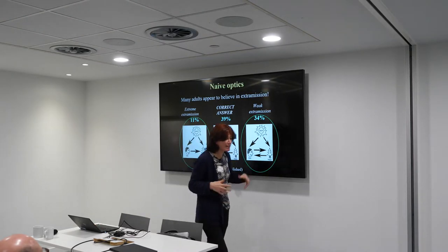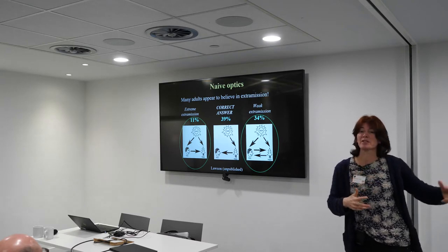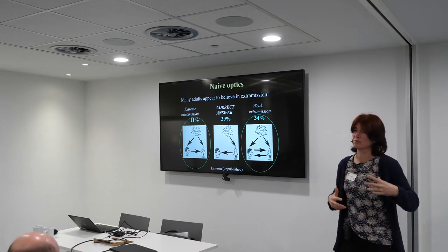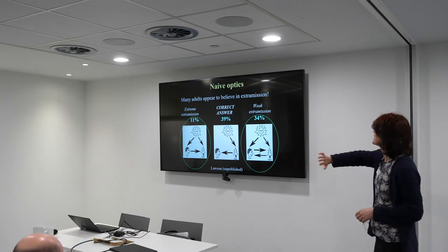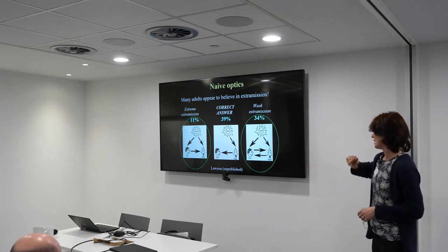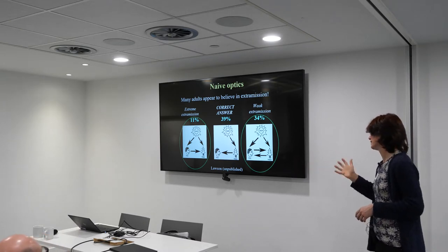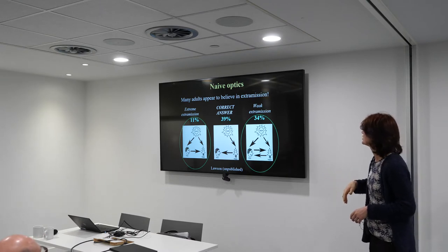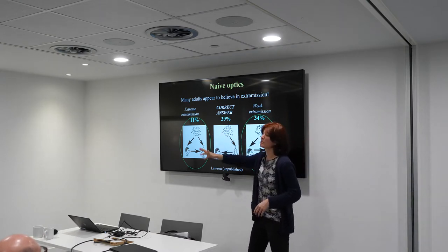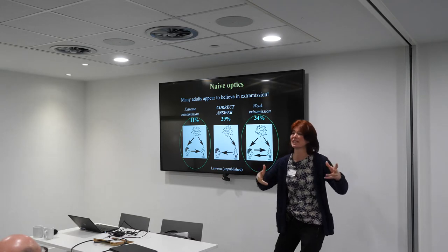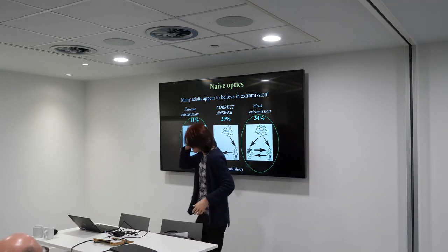Naive optics, if you haven't heard about it, is what the woman on the street might understand about how vision works and how their visual system works. Depressingly, after having some visual perception lectures, the majority of my psychology undergraduates still believed in some form of extramission — that some kind of light comes out of their eyes and that helps them to see.